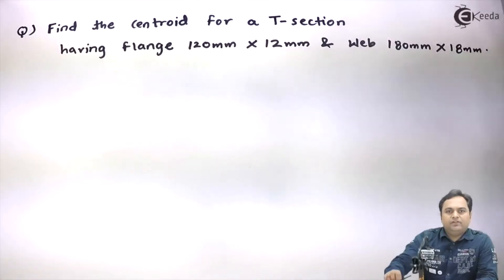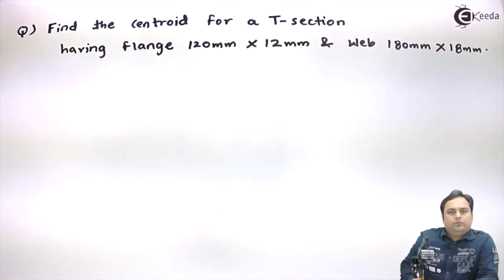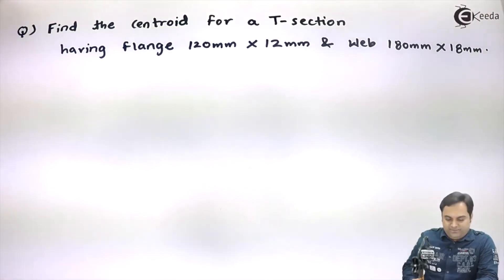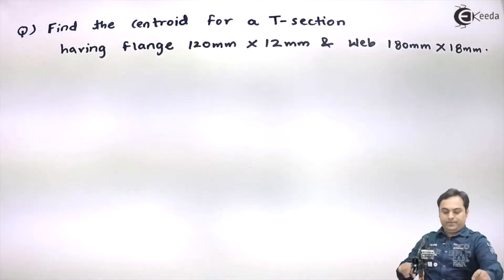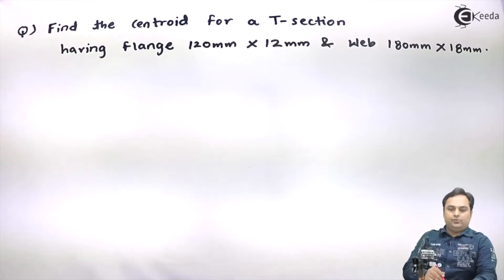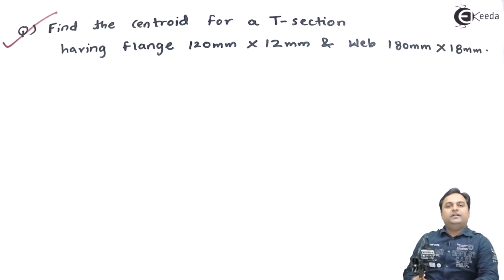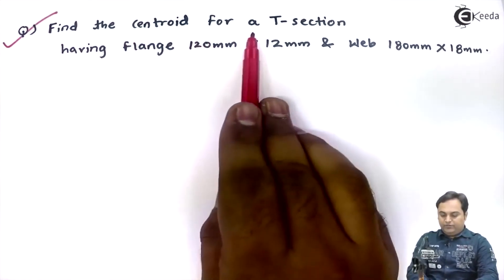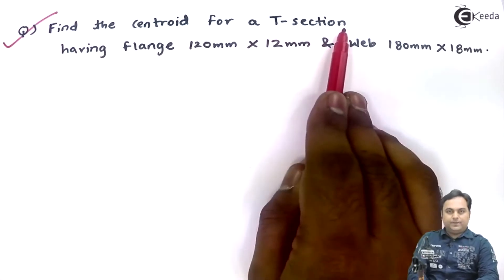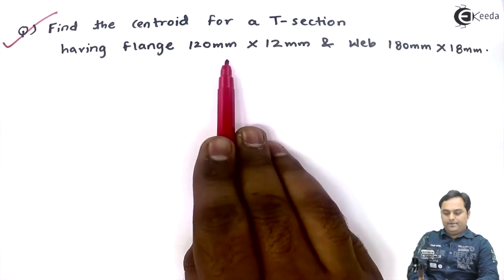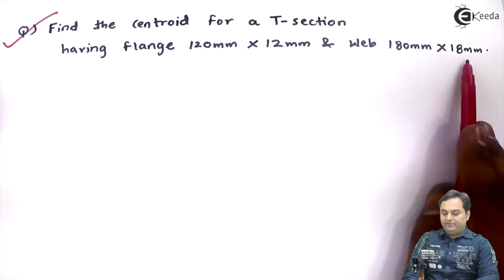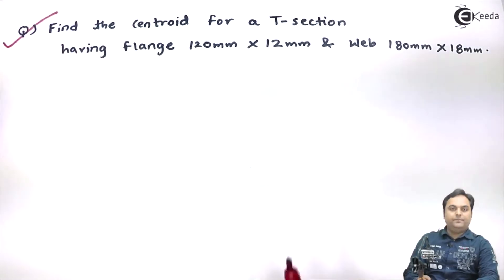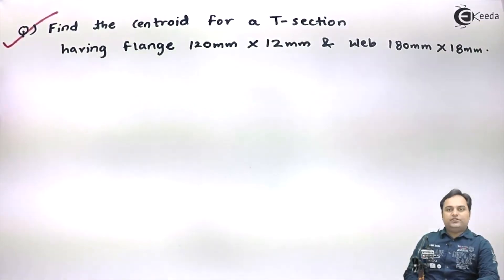In this video we will be solving the problem of centroid for a T-section. The question is: find the centroid for a T-section having flange 120 mm × 12 mm and web 180 mm × 18 mm.